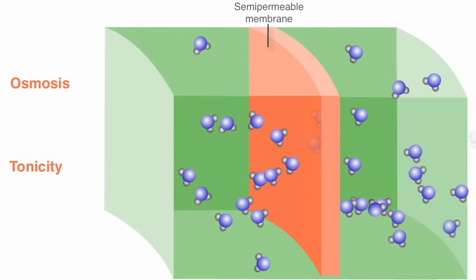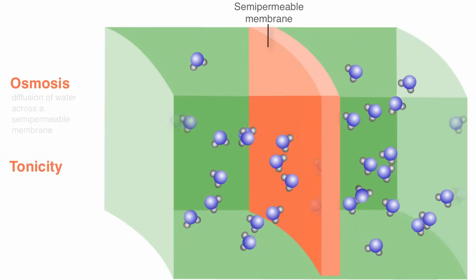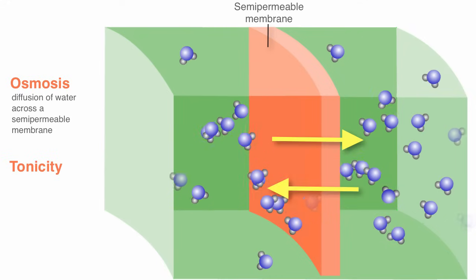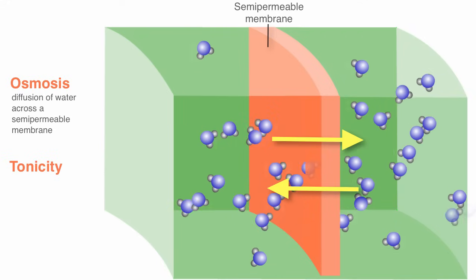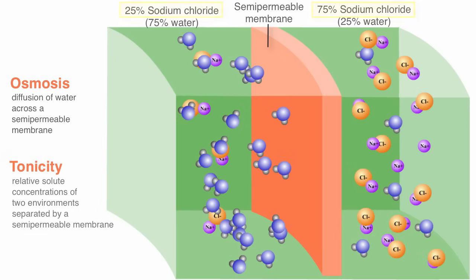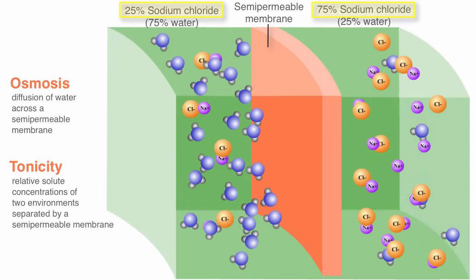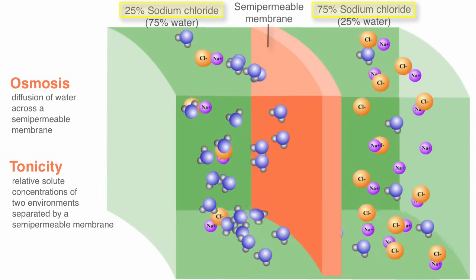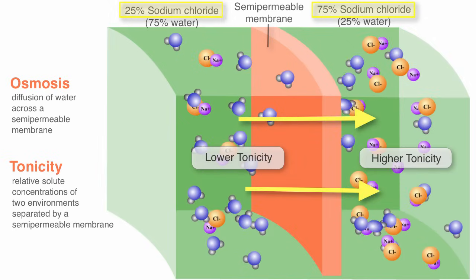Before we take a look at how osmosis and tonicity affect a cell, let's review what each of these terms means. Osmosis represents the diffusion of water across a semi-permeable membrane. The term tonicity refers to the relative solute concentration of two environments separated by a semi-permeable membrane. In other words, by comparing the tonicity of the solutions, you can determine the direction in which osmosis will occur.